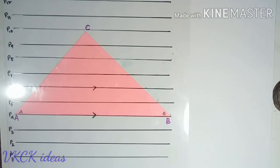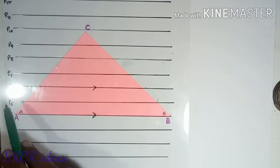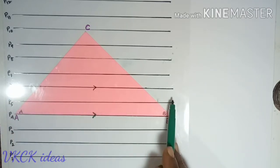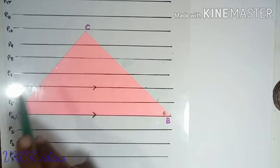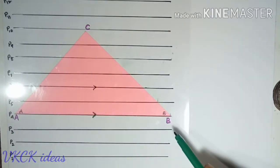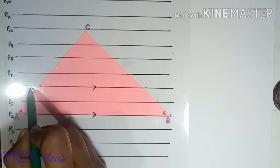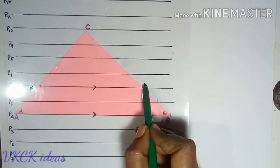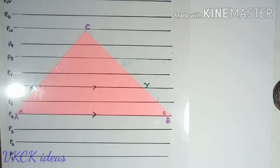So these two are parallel to one another. This parallel line P6 is intersecting the sides AC and BC. Let me say at the point X and Y. I will make a small observation here.